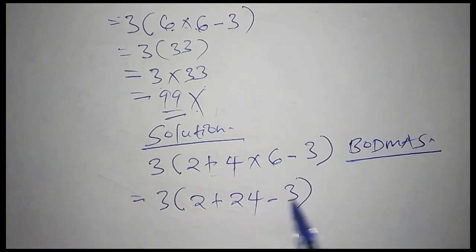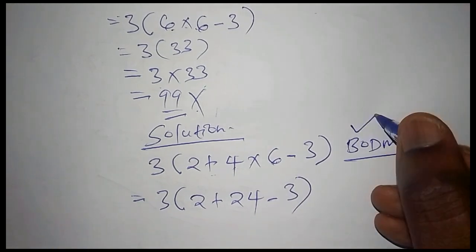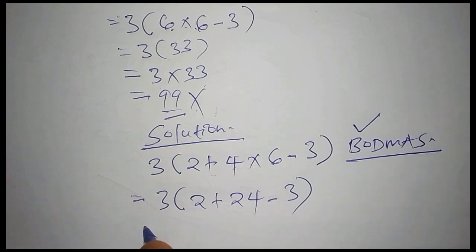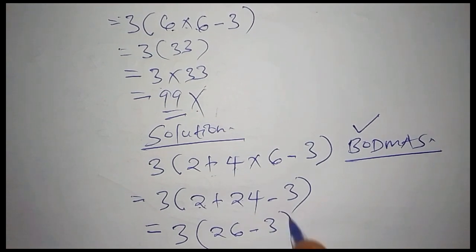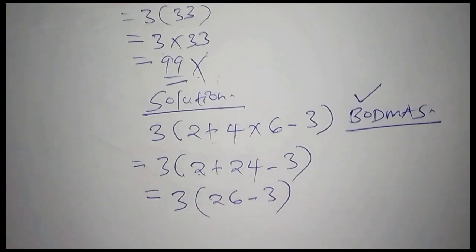Still you are not done with the bracket because inside this bracket, now we also need to work out the addition side, that is 2 plus 24. We shall have 26 subtract from 3. Still we are not yet done with the bracket.